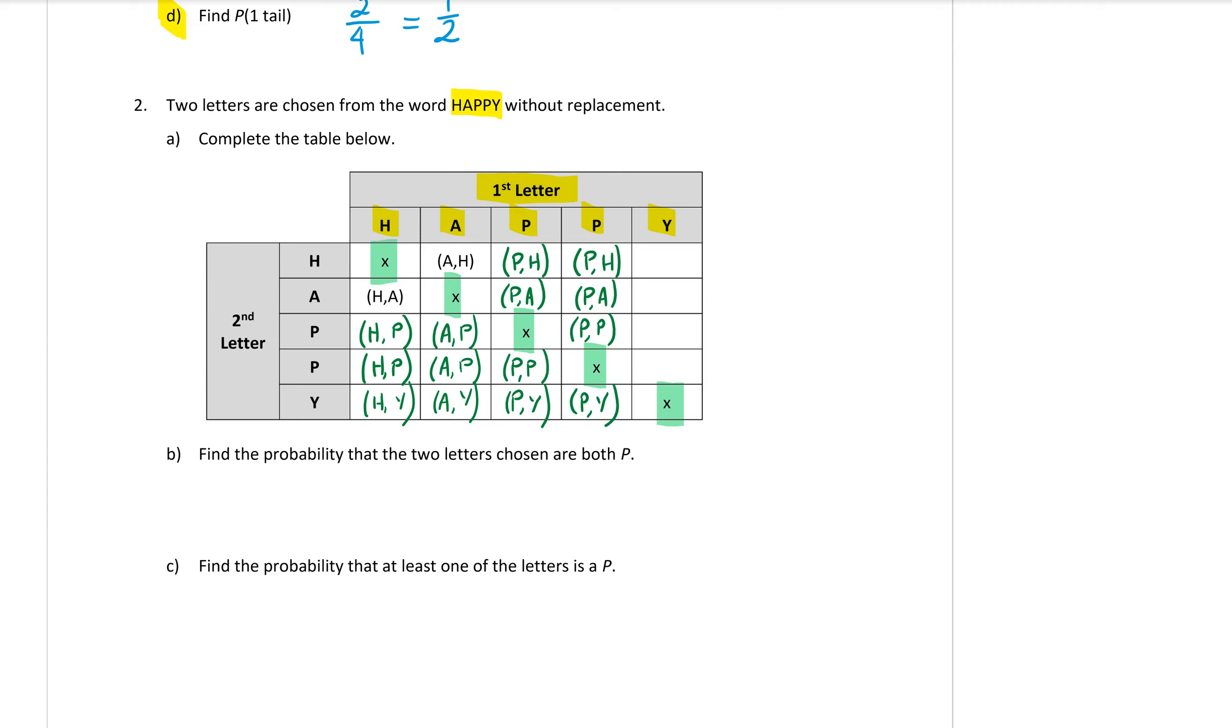And for the last column, the Y is the first letter, so it would be Y H, Y A, Y P, P, and you can't have Y Y. All right, so that is the table completed.